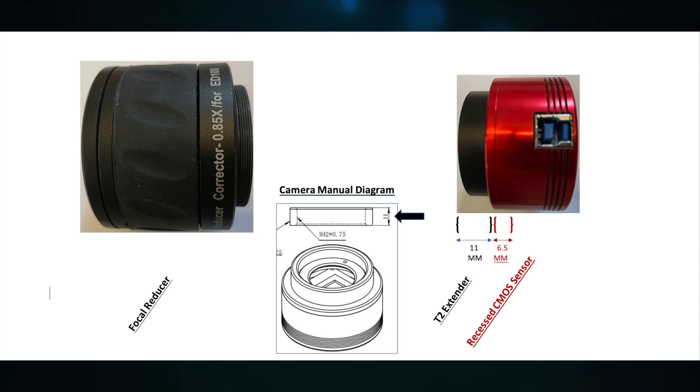And in the ZWO manual, they give the measurement of that T2 extender. You can see here it's 11 millimeters in the manual as well. Of course, you could measure this easily with a ruler.